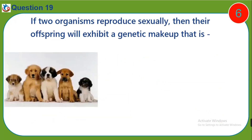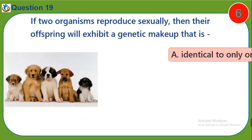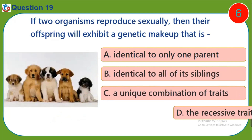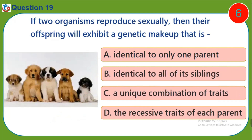Question nineteen: If two organisms reproduce sexually, then their offspring will exhibit a genetic makeup that is — a) identical to only one parent, b) identical to all of its siblings, c) a unique combination of traits, d) the recessive traits of each parent.